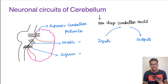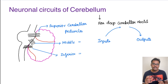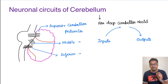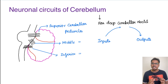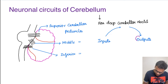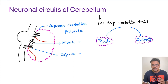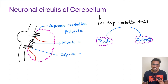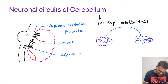Coming to the neuronal circuits in the cerebellum — there are some inputs and some outputs, and everything entering has to reach some nuclei. These groups of nuclei are called deep cerebellar nuclei, and from the deep cerebellar nuclei some outputs will go out. These connections enter the cerebellum through different regions: some entering superiorly, some in the middle region, and some inferiorly. These connections are called the superior peduncles, middle peduncles, and inferior peduncles.